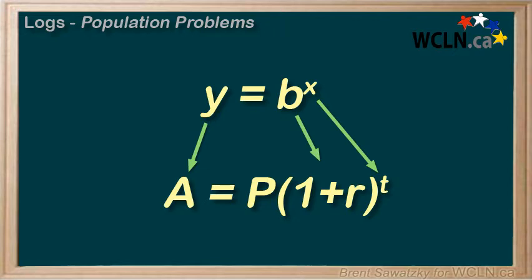Considering the base, we remember that if b is greater than 1, then we have exponential growth. So this makes sense in that it's a plus in here, right? With a plus, we know that our base will have to be bigger than 1. So it all makes sense so far.